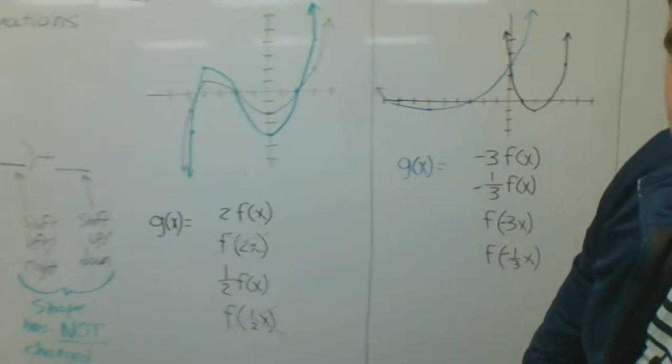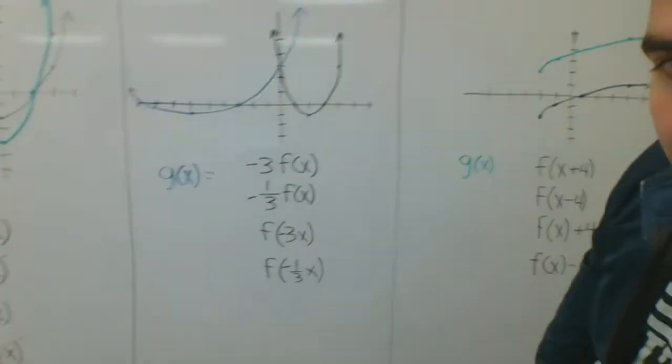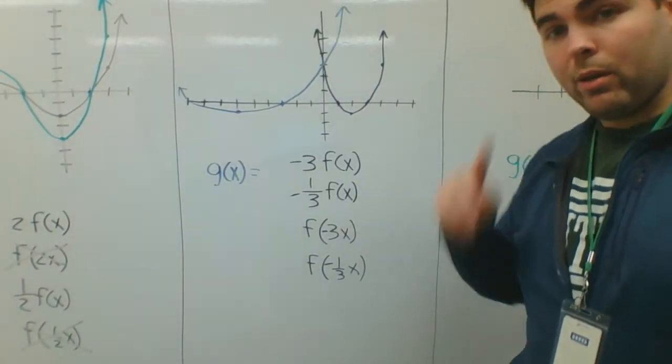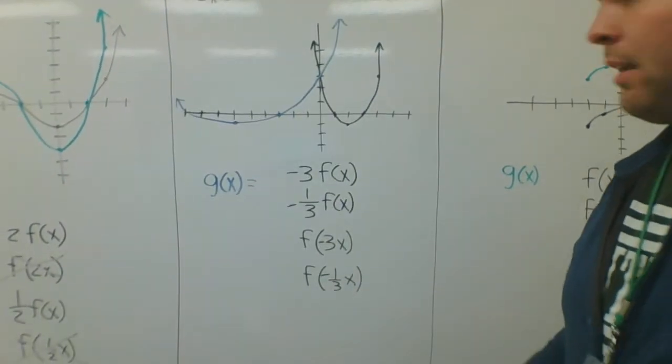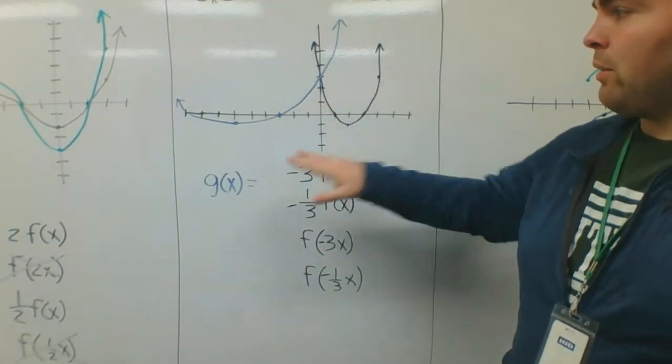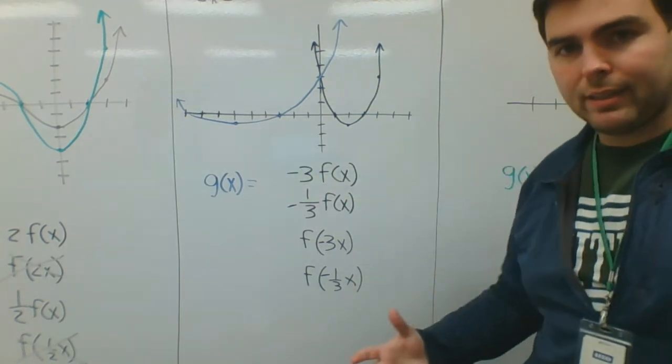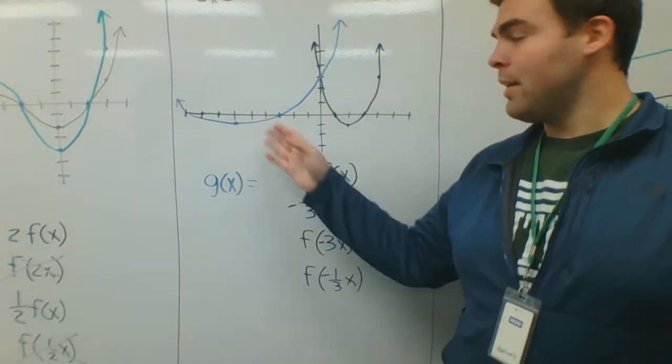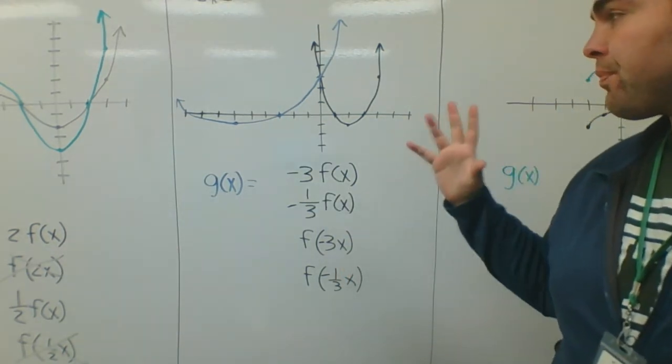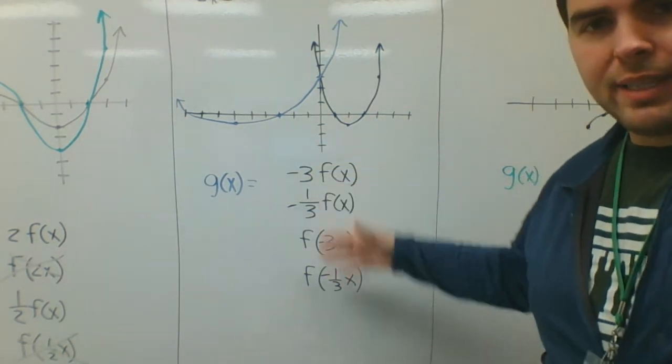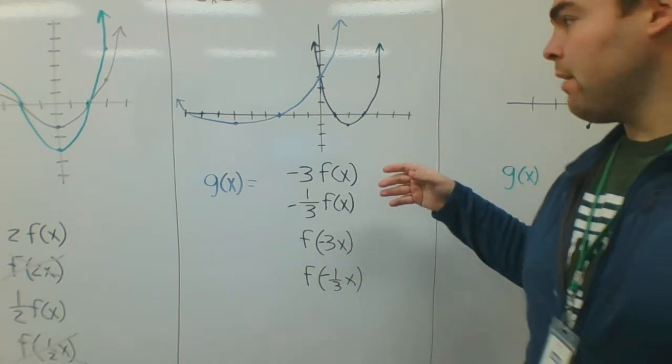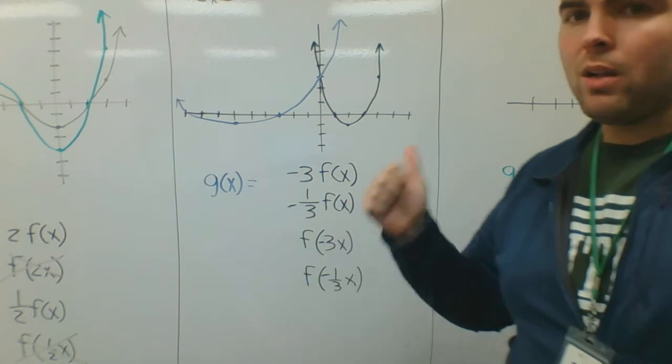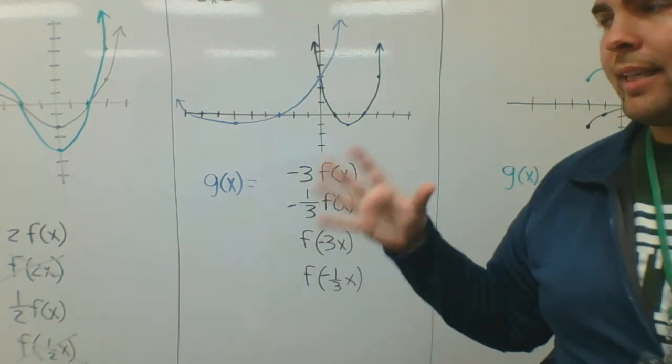Let's take a look at example 2 now. So example 2, if you want to pause and get this down in your notes, we're looking at this original f of x compared to this blue g of x. It's a little hard to see if it's blue from your side of things, but it's blue. Trust me. So this time we introduce a negative. Is it the same shape? No, it's not the same shape. I know it's going to be either vertical or horizontal scaling.